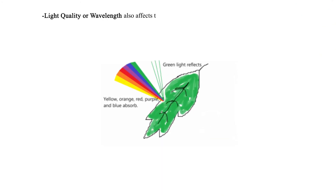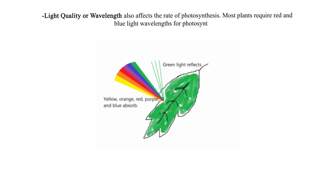Light quality or wavelength also affects the rate of photosynthesis. Most plants require red and blue light wavelengths for photosynthesis. Light duration also affects the rate of photosynthesis.